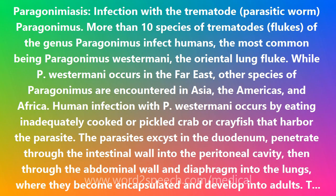During the chronic phase, pulmonary manifestations include cough, expectoration of discolored sputum, hemoptysis (spitting up blood), and chest radiographic abnormalities. Extrapulmonary locations of the adult worms result in more severe manifestations, especially when the brain is involved.